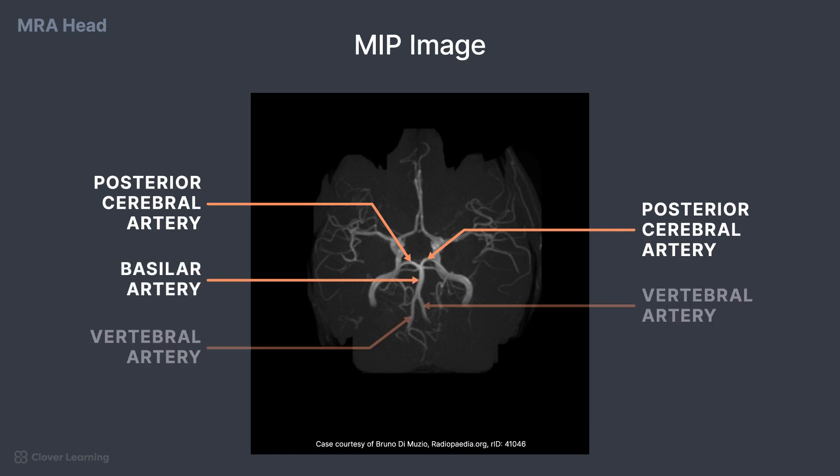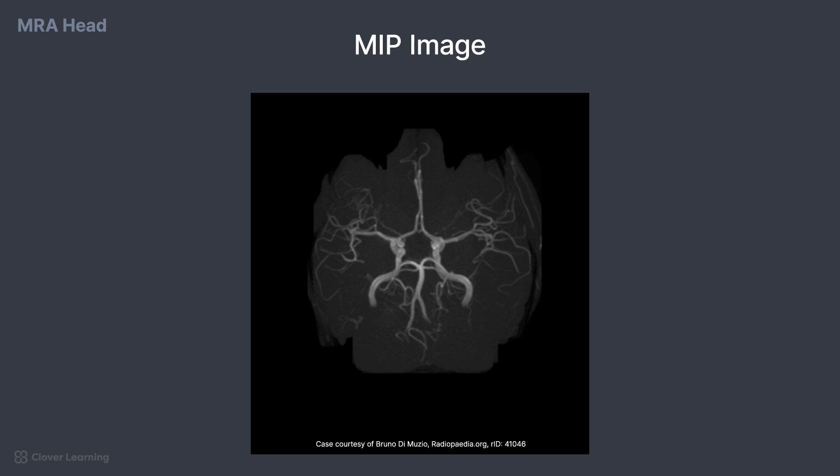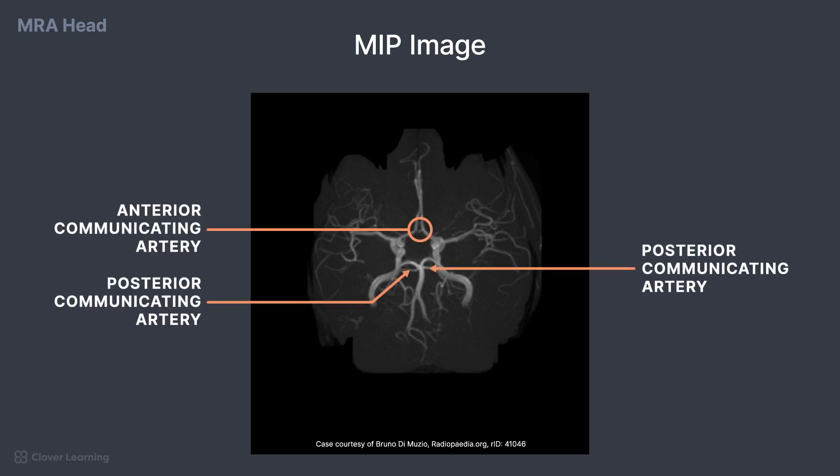The legs of the stick figure are the right and left vertebral arteries. The connectors of the Circle of Willis are the anterior communicating artery and the posterior communicating artery. These are very small structures and sometimes may not be fully visible.